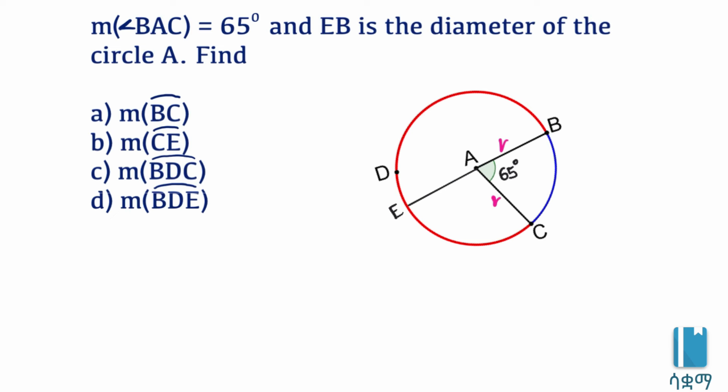The vertex is the center of the circle, so this is the central angle — angle ABC is 65 degrees. Since the vertex is the center of the circle, this is a central angle. The measure of the central angle equals the measure of the arc, so arc BC is equal to 65 degrees.